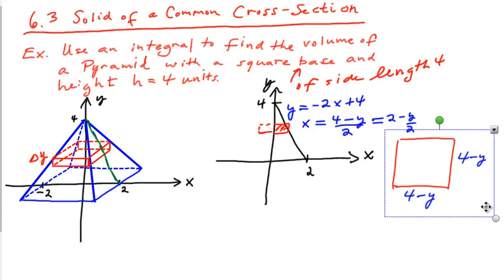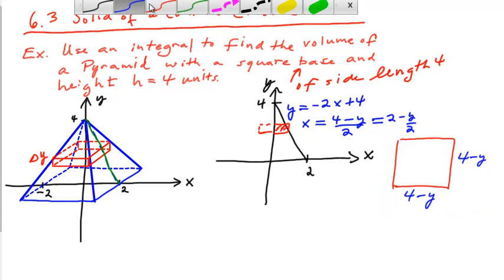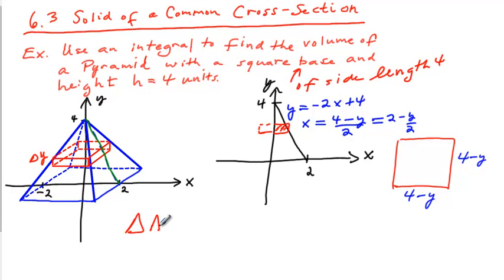Okay, so now we have the square. Let's write the area formula for the cross-section. So remember we can write it as delta a sub i, or in the context of this problem we often write it as a of, in this case it's going to be y sub i. So let's see, here it's going to be 4 minus y sub i quantity squared. That would be the area formula, and now we want to find the volume.